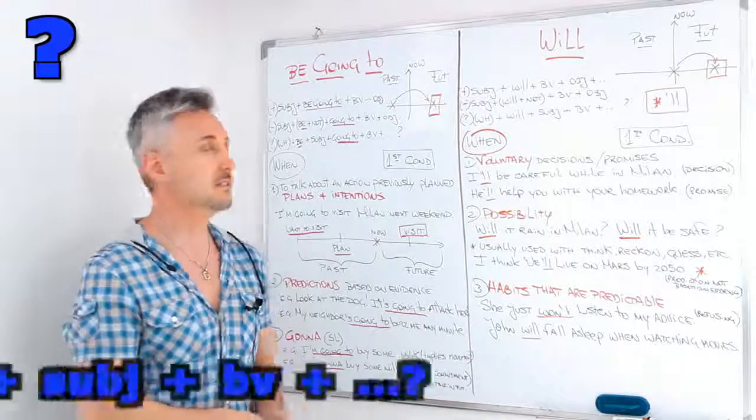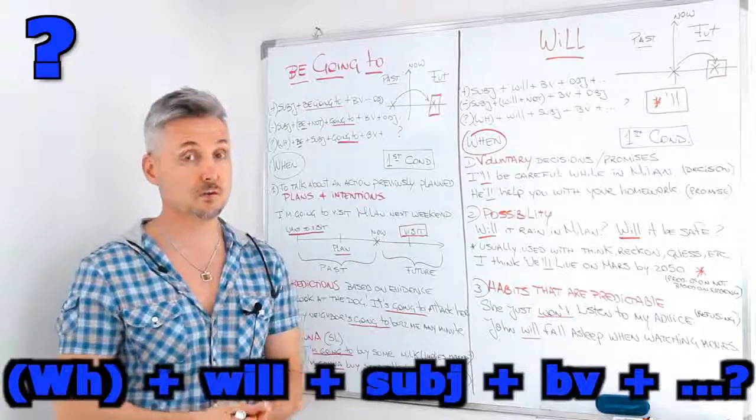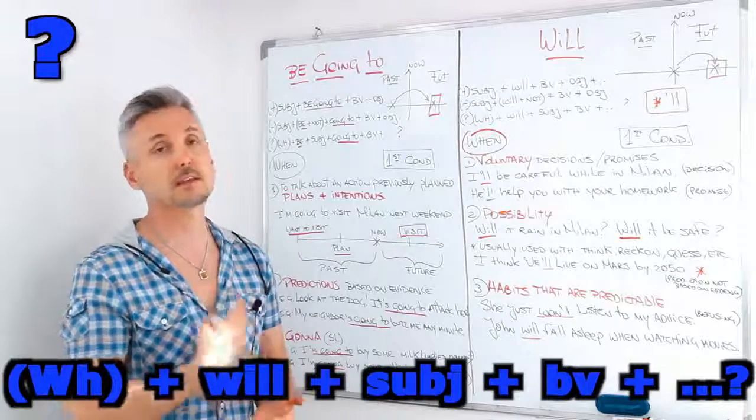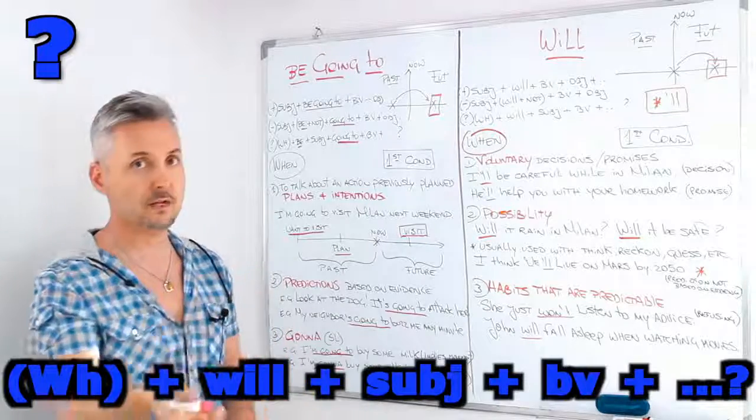For an interrogative sentence, we need the WH question word, if any, then we need will, then we need the subject, then the base of the verb, and then whatever is next.